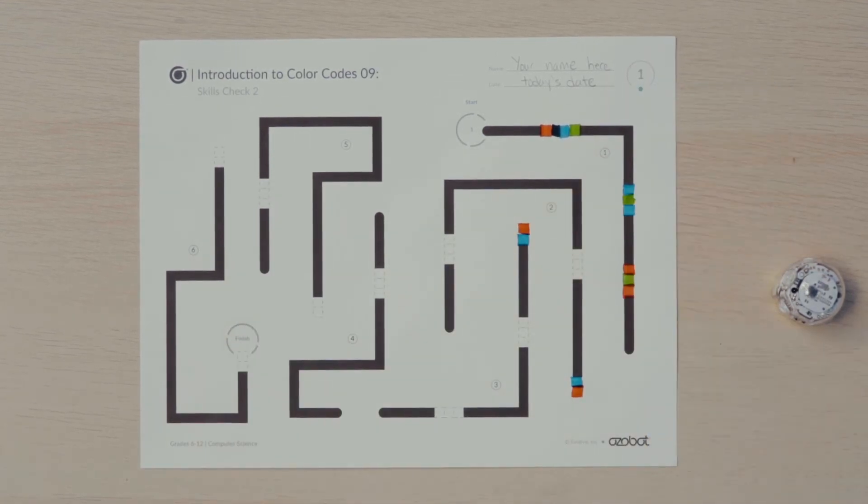The next space is for a speed code of your choice. Refer to your color codes chart and choose which speed you want your bot to go. The third space is for a line switch code. What direction will your bot need to go to proceed to the next line? Find the line switch code on the color codes chart and fill it in on your activity sheet.